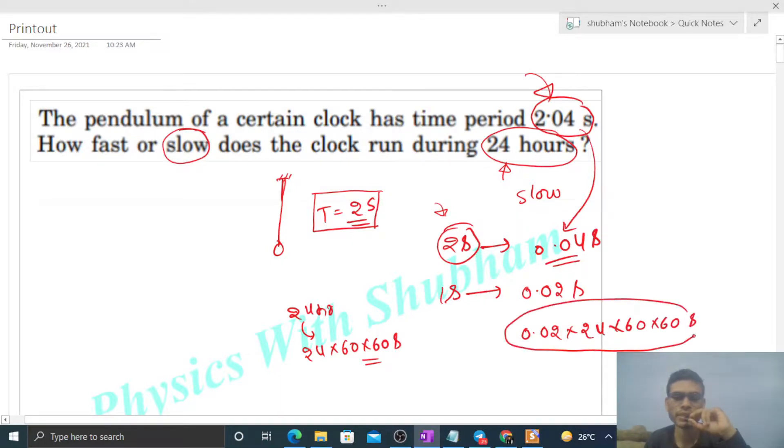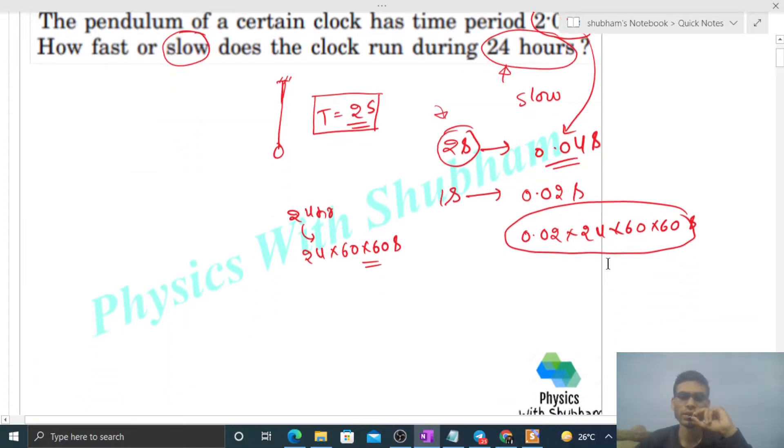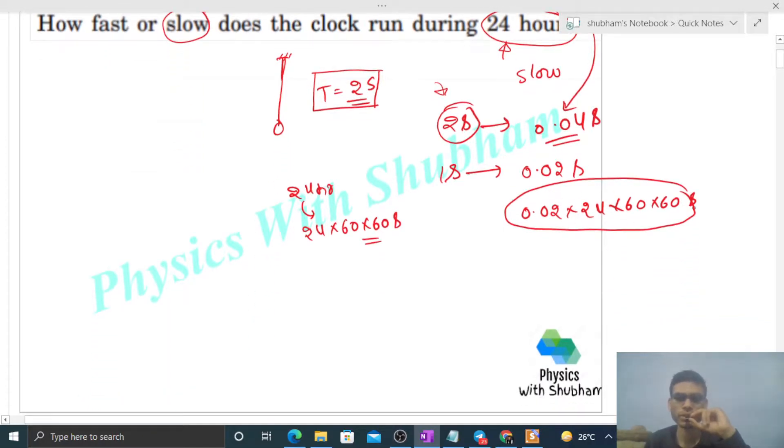It will go behind by this much time. I think the answer is given in minutes, so you can divide this, meaning convert these seconds to minutes. So divide this by 60. So this will be your answer: 0.02 times 24 times 60 minutes. The clock will be behind by this many minutes in 24 hours.